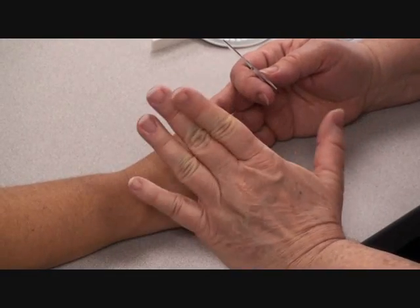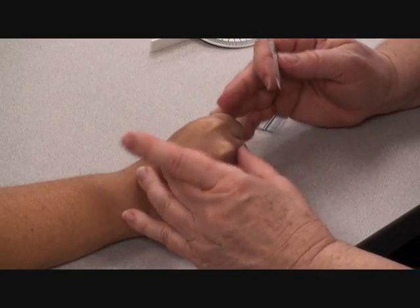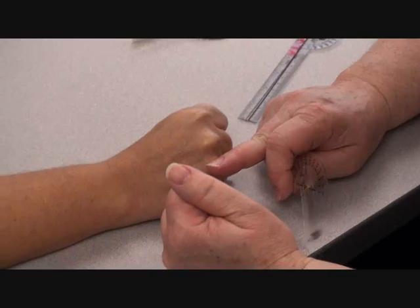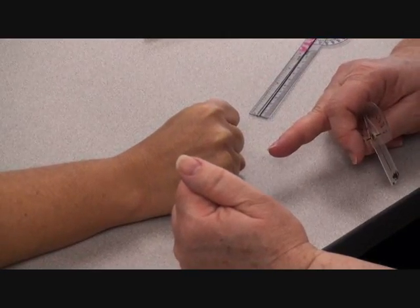But I would record or take note of all my extensions first. And then if I were measuring all four digits, I would measure all the way across and measure all of my MPs and record those and then measure all my IPs and then measure all my DPs.